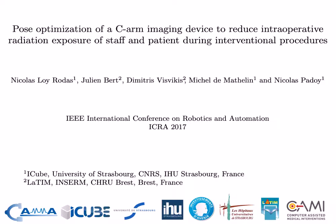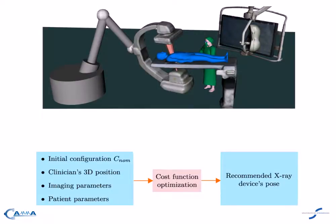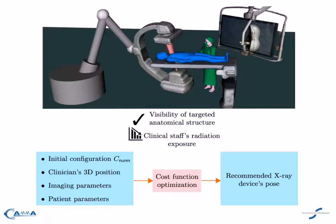In this paper, we propose an approach to optimize the pose of an angiographic C-arm. From an initial nominal configuration of the device, our approach proposes a close pose which preserves the visibility of the targeted anatomical structure while reducing the radiation exposure of both patient and clinical staff.